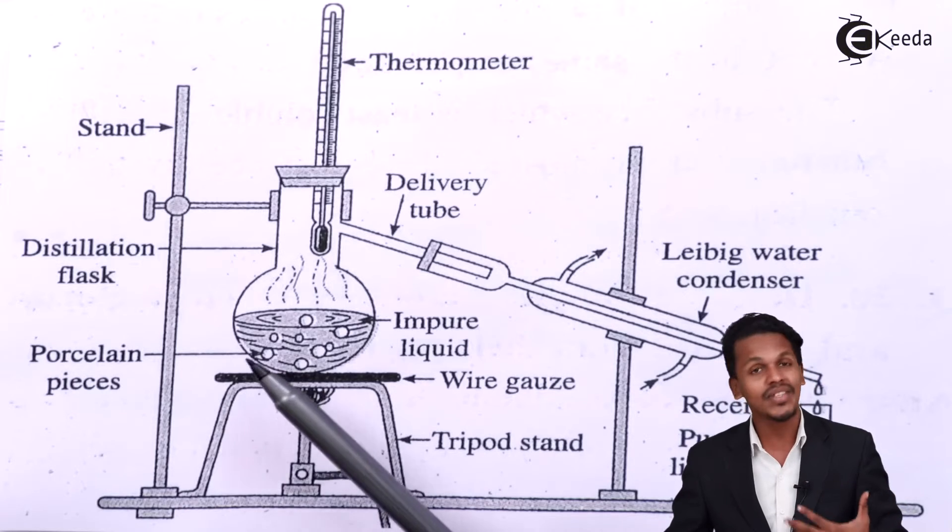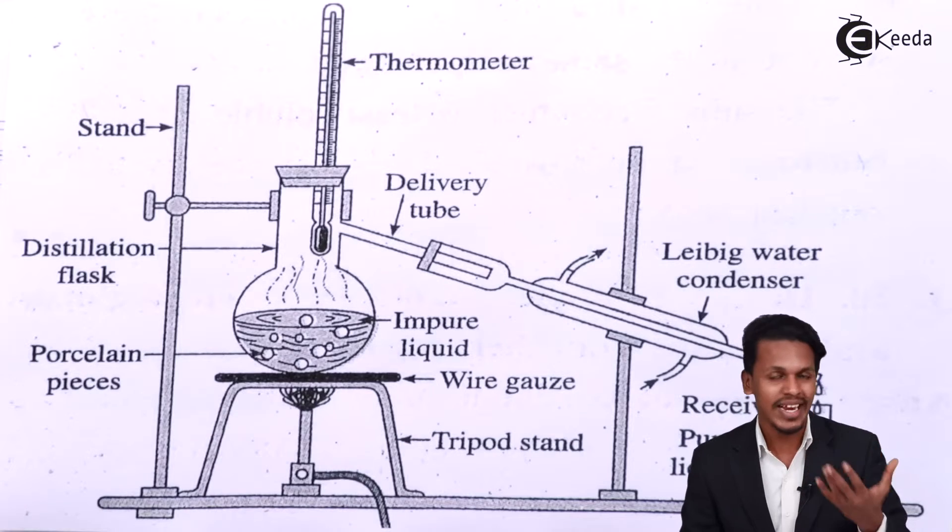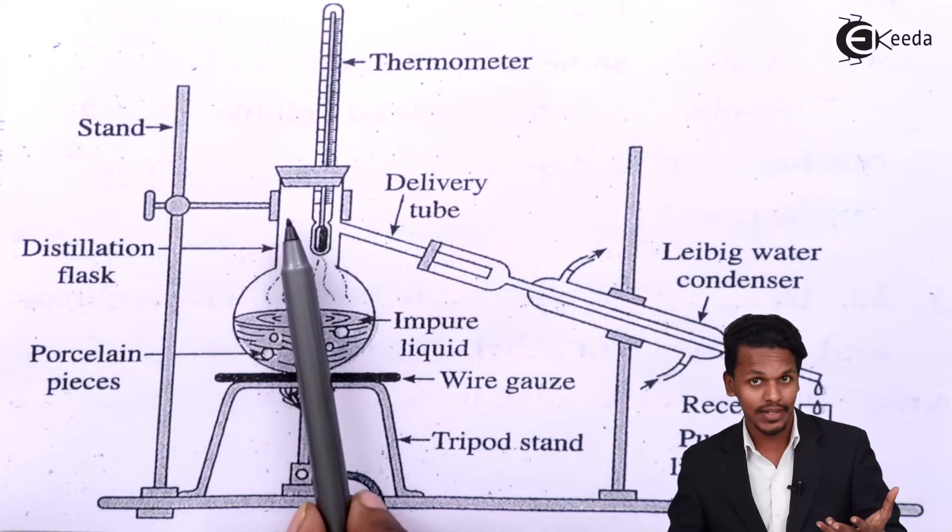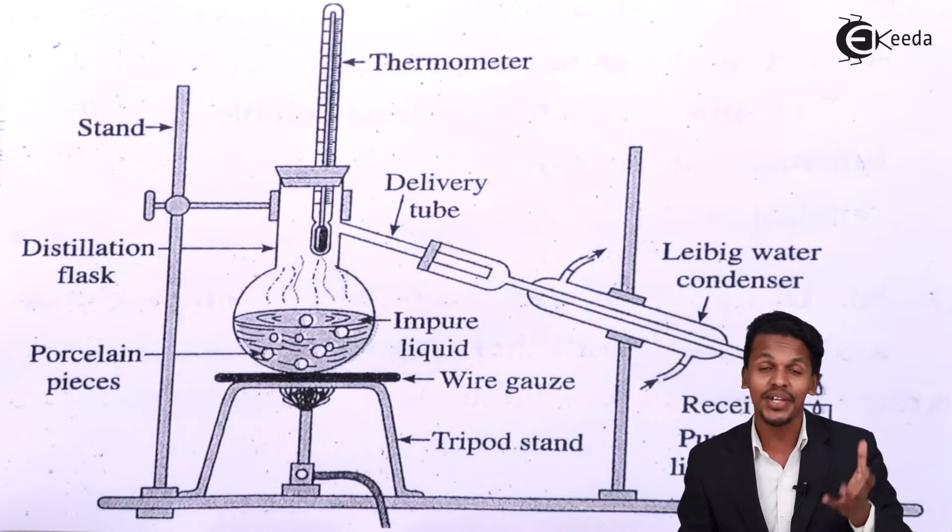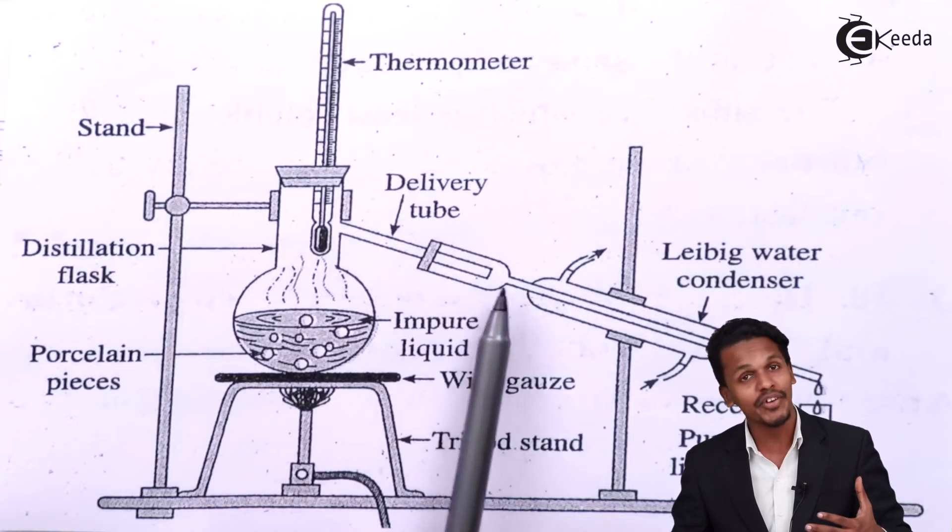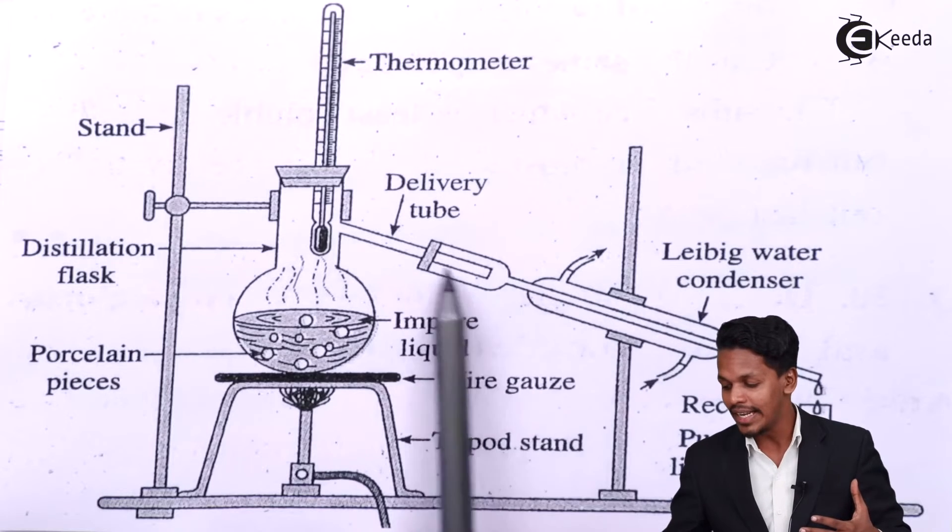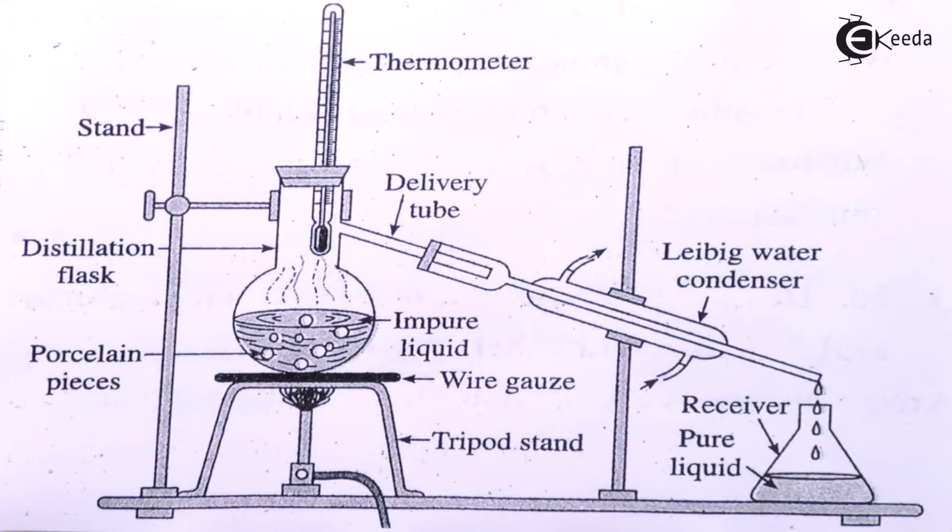Now what happens is this liquid which gets boiled up obviously it will convert into a gaseous state and that gaseous liquid or the one which has been converted into gaseous state will transfer through this delivery tube and this is what it will go through the water condenser. So now this gas it will get condensed and while condensing it will form a liquid.